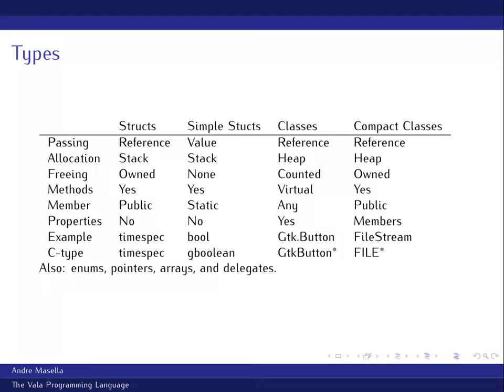Simple structs are basically values — an int is a simple struct in Vala terms. Allocation is on the stack, but simple structs aren't owned at all; they're just values so there's no freeing necessary. You can add methods to a simple struct, so yes, you can add a toString method to int. Members can only be static, like int.MAX. Obviously no properties if you can't even have instance members.